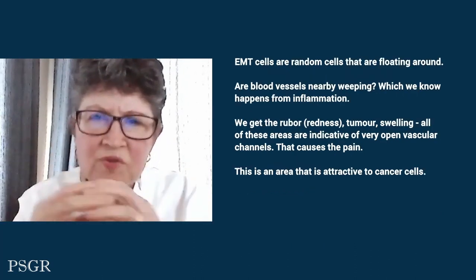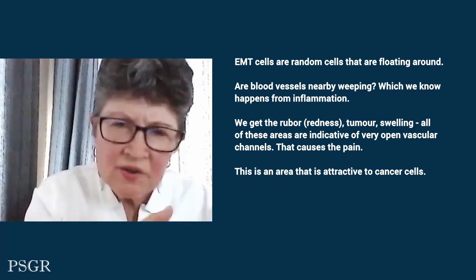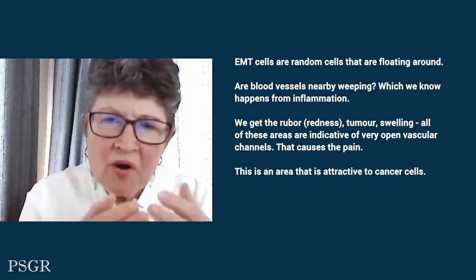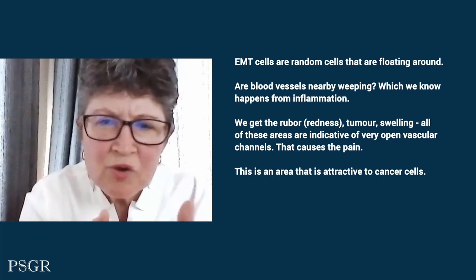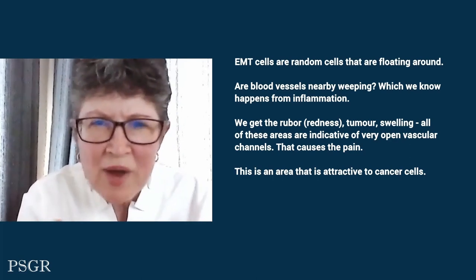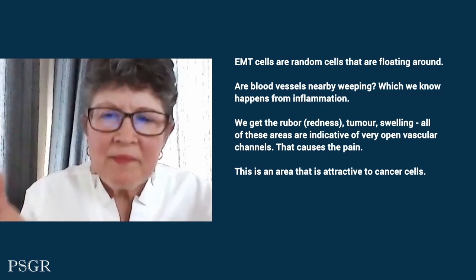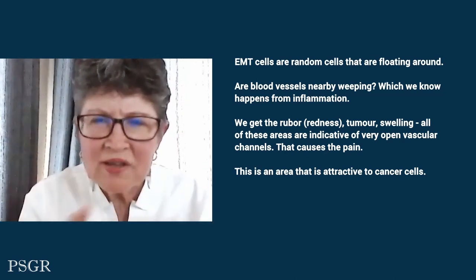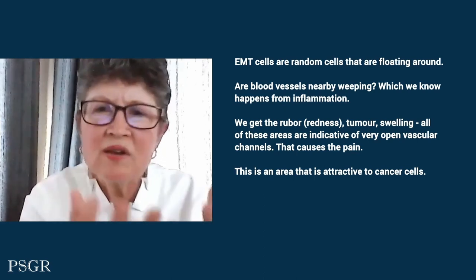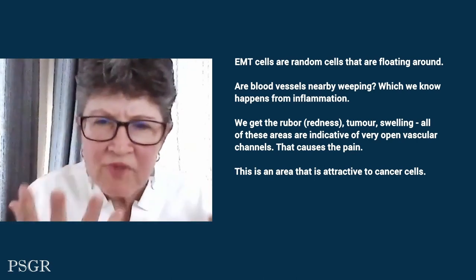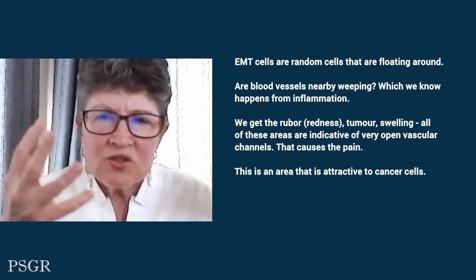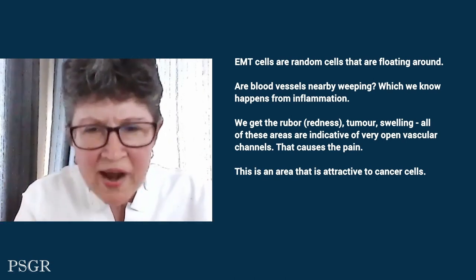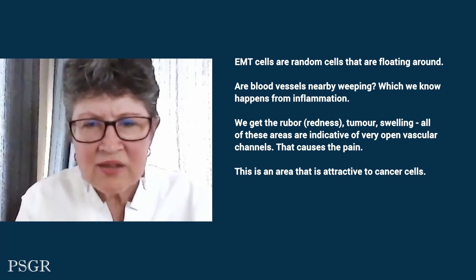EMT cells are sort of random cells floating around, and it depends on whether the blood vessels nearby are 'weepy,' which we know happens from inflammation — the rubor, tumor, the swelling, the redness. All of these are indicative of very open vascular channels, which also causes the pain. So inflamed areas are attractive to cancer cells.